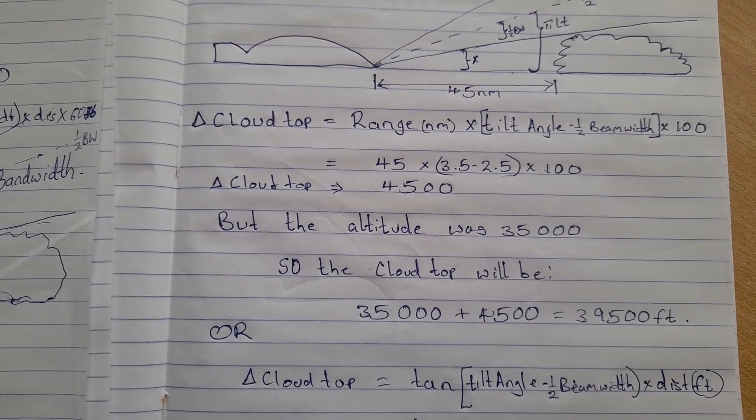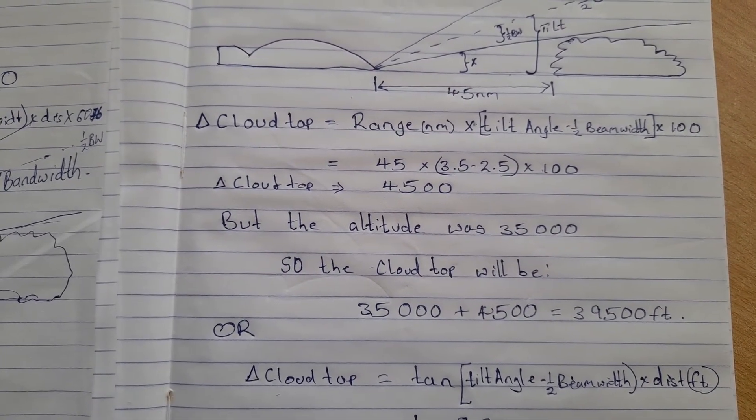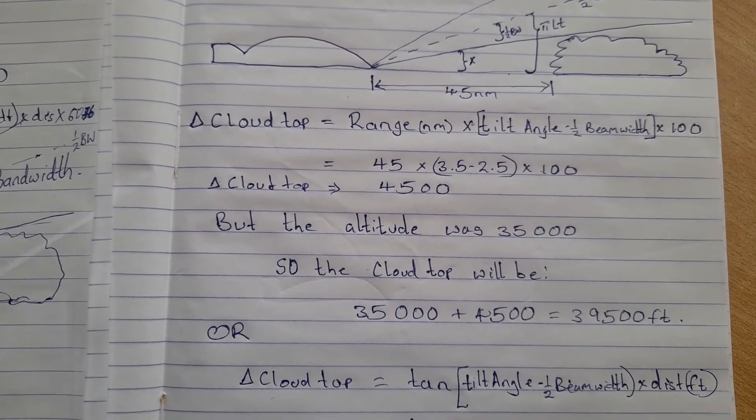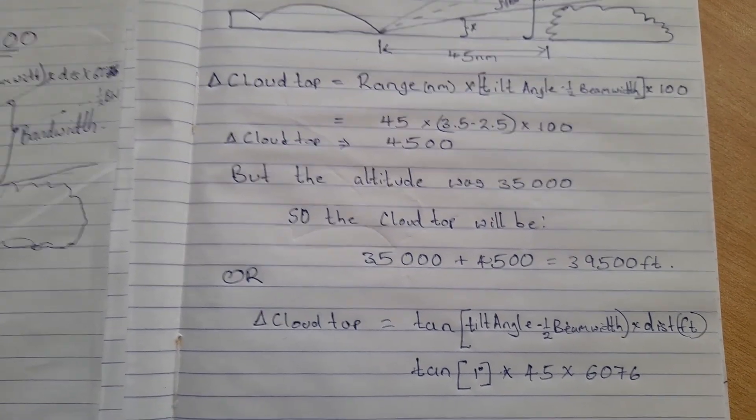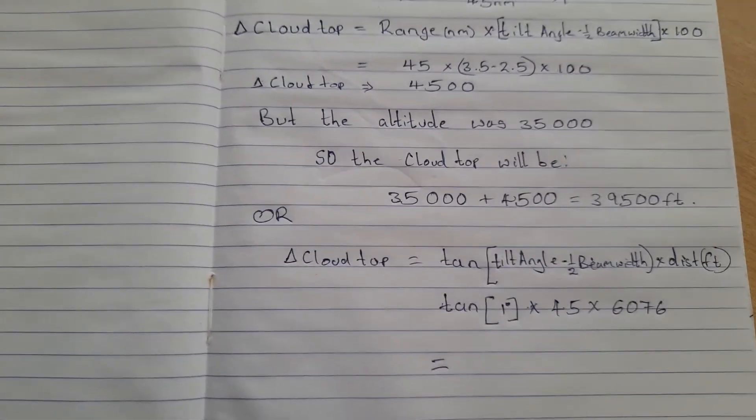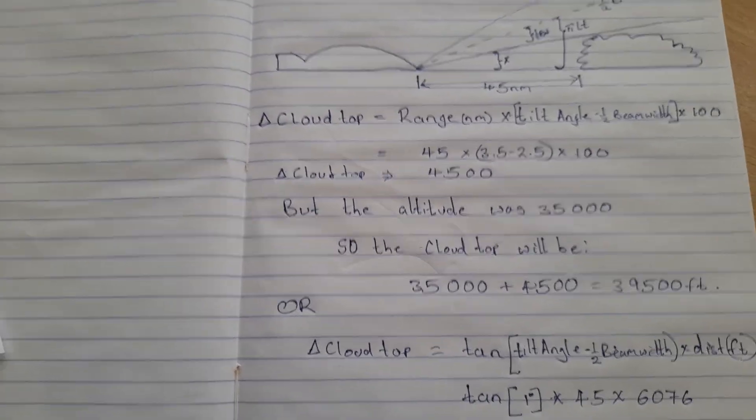So you get one degree. The distance was 45 nautical miles. One nautical mile equals 6,076 feet. So tan of one degree times 45 times 6,076. You almost get something close to the answer which was 35 something.